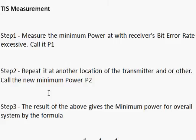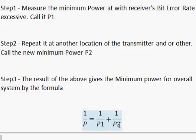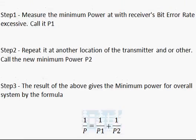Then we repeat the same thing at another location — for example, with the antenna at an angle of 30 degrees or 90 degrees with respect to the mobile device. We can take measurements at several different elevation angles and also rotate the phone to get different azimuthal angles. So let's say we measure at two different angles: at one point we get reading P1, like minus 100 dBm, and at another angle we get reading P2. The overall minimum power is then calculated using the formula: 1/P = 1/P1 + 1/P2. The value of P will be lower than both P1 and P2, and that value of P is the overall measurement of sensitivity.